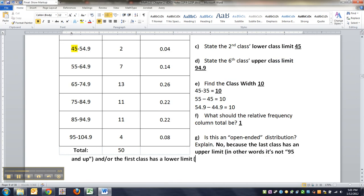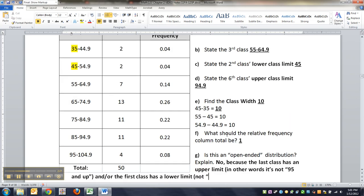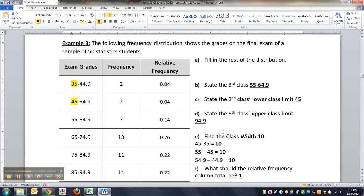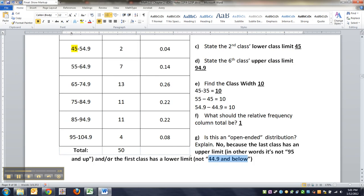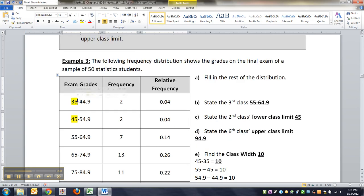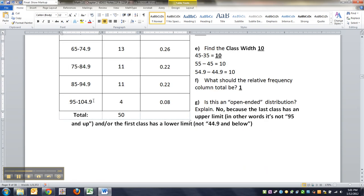They didn't write it's not 44.9 and below, right? That's what it would take to be open-ended. Open-ended means anything lower than 44.9, but that's not how we did it. We just said 35 to 44.9. In other words, nobody in this class got lower than a 35, nobody in this class got higher than a 104.9. It's not 95 and up to anything you want, it's 95 and up to that specific number, no higher.